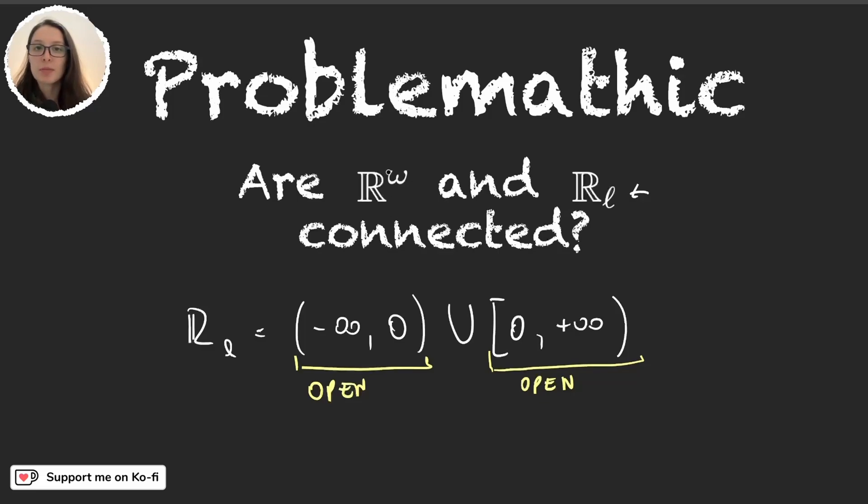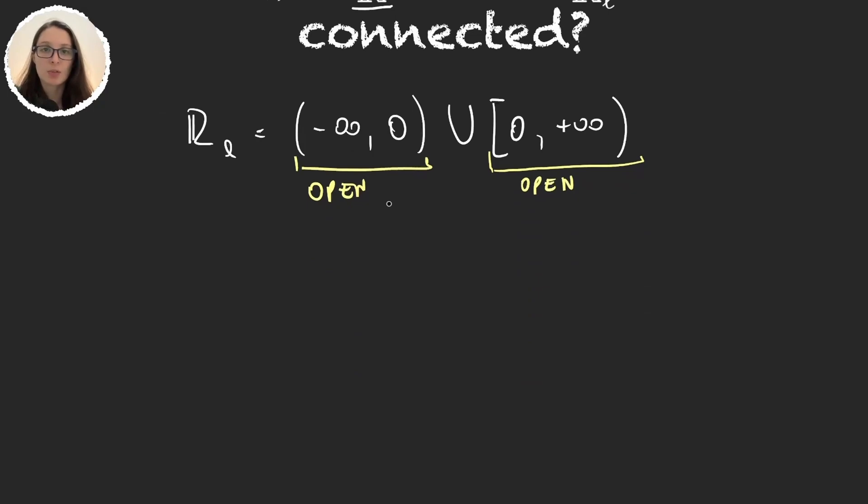So let's actually get to the important part of the video, that's proving if R-Omega is connected or not depending on which topology we're choosing. So let's start with the box topology. In the box topology R-Omega is not connected and the proof for this is not at all trivial. You have to take a very specific set to take as a separation.